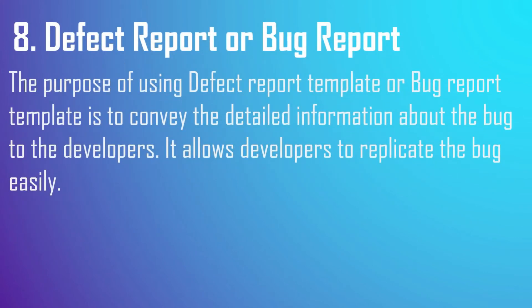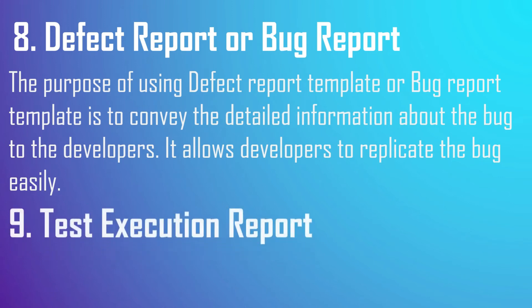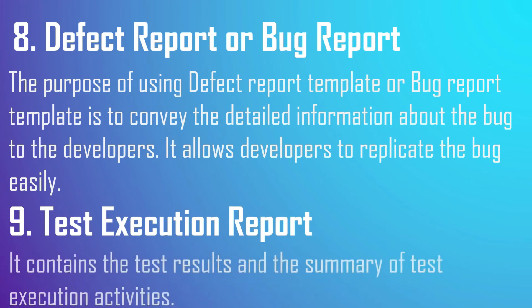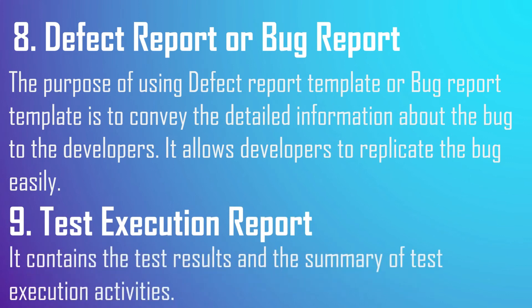Next, defect report and bug report. The purpose of using a defect report template or bug report template is to convey detailed information about the bug to the developers. It allows developers to replicate the bug easily.